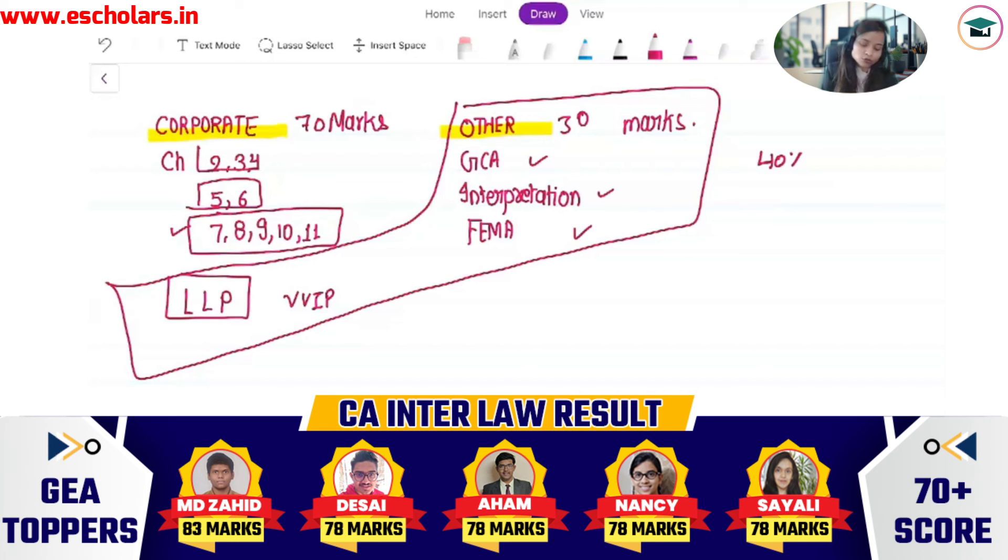After that, you will come to chapter 2, 3, 4, that is Incorporation, Prospectus Allotment, Share Capital and Debentures. This is the priority and sequence. Now, how do we study? First of all, conceptual clarity.